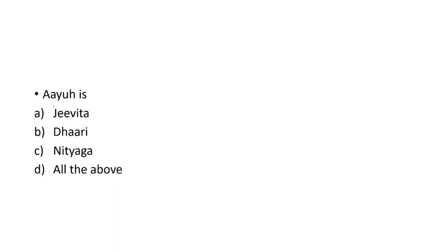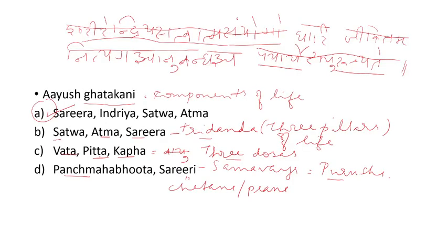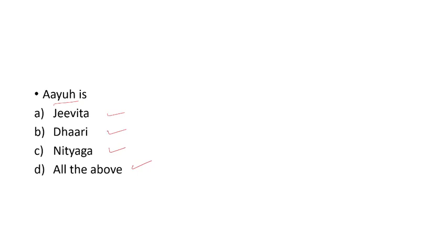Then a simple question: what is Ayu? We go through the options first. The options are: Jivita, Dhari, Nithyaka, and 'all of the above.' We have to check the three terms carefully. From the sloka, the paryaya (synonyms) of Ayu are: Dhari, Jivita, Nithyaka, and Anubandha. Since Jivita, Dhari, and Nithyaka are all in the question, you can choose 'all of the above' as the answer for Ayu.